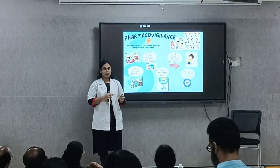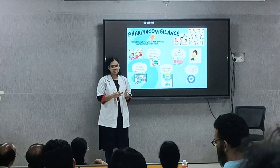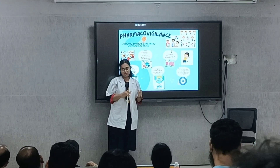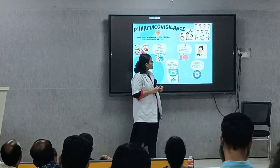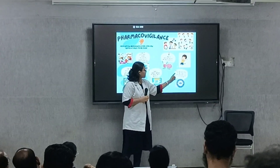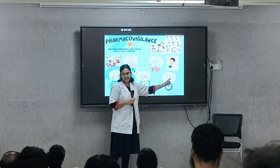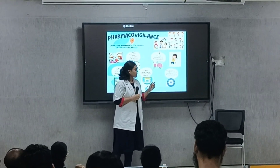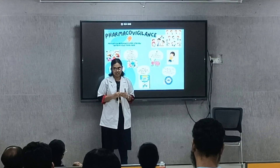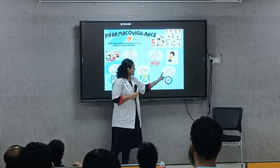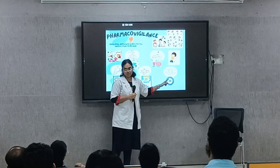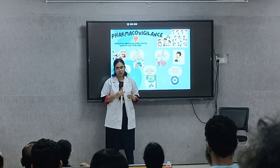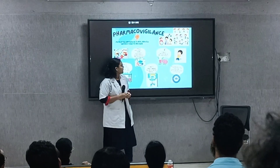Now that we know the pharmacovigilance process, what is the pathway to report a drug? When anyone encounters an adverse drug reaction, they must immediately report it to healthcare professionals, who then report it to area monitoring centers, which in turn report to the national coordinating centers, and finally to the global monitoring centers. The decision on safe drug usage is made by the CDSCO — the Central Drugs Standard Control Organization — which decides whether the drug needs to be modified, banned, or otherwise changed. Thank you.